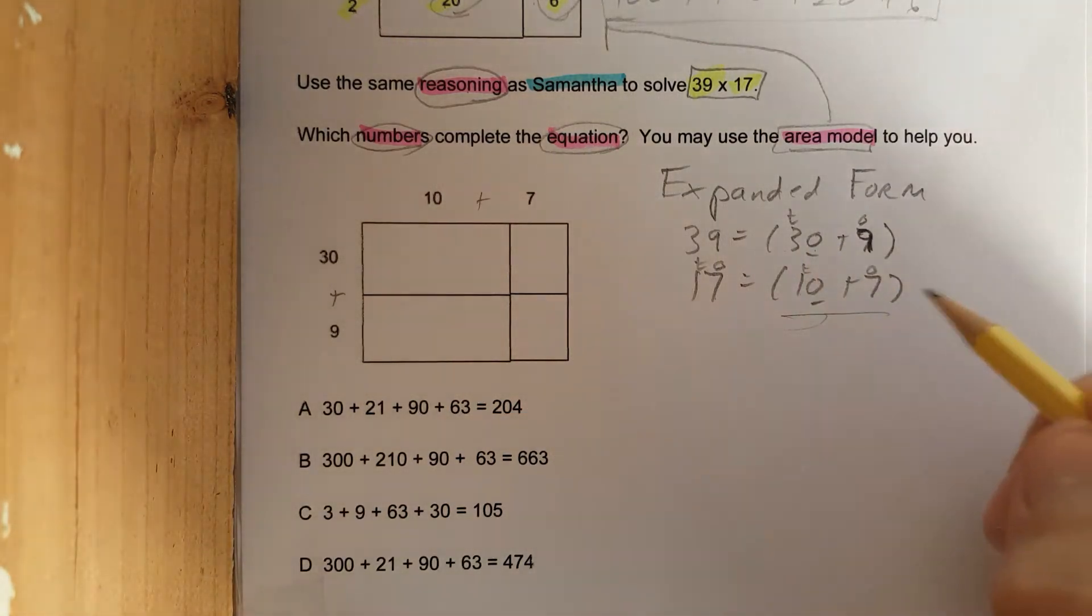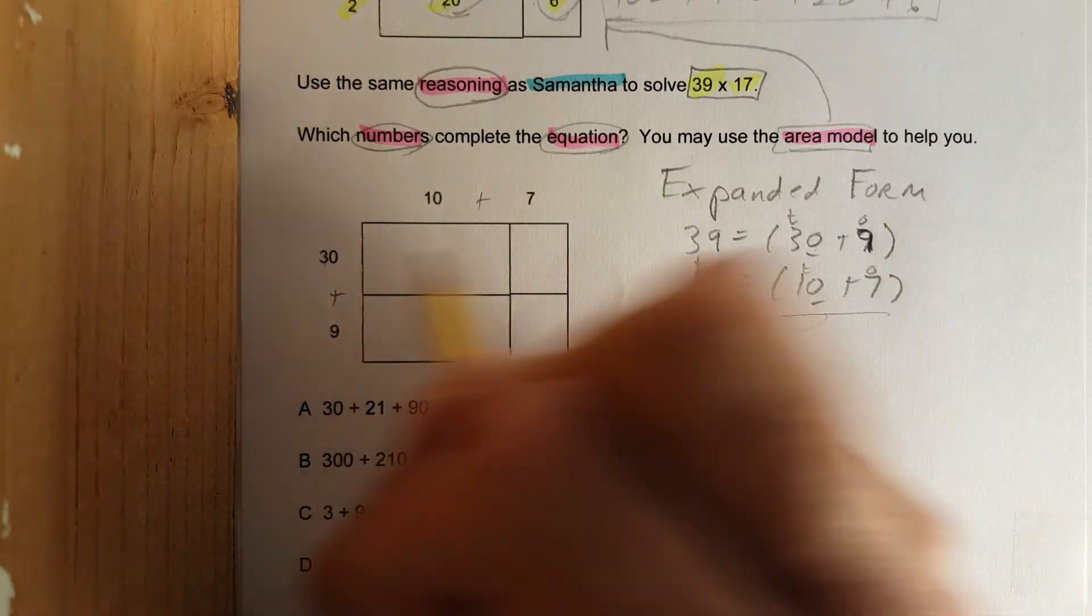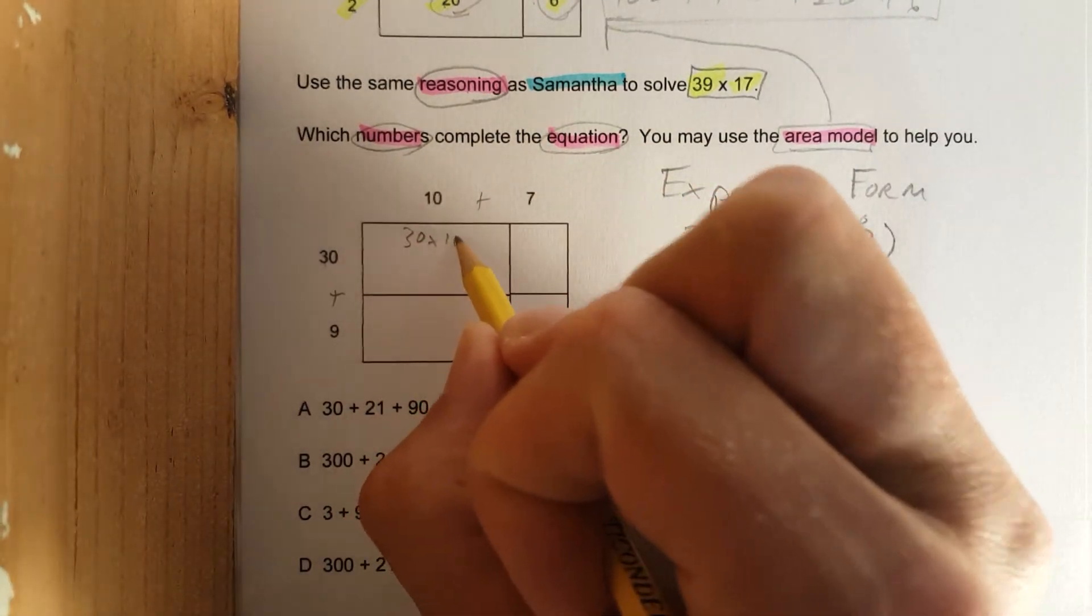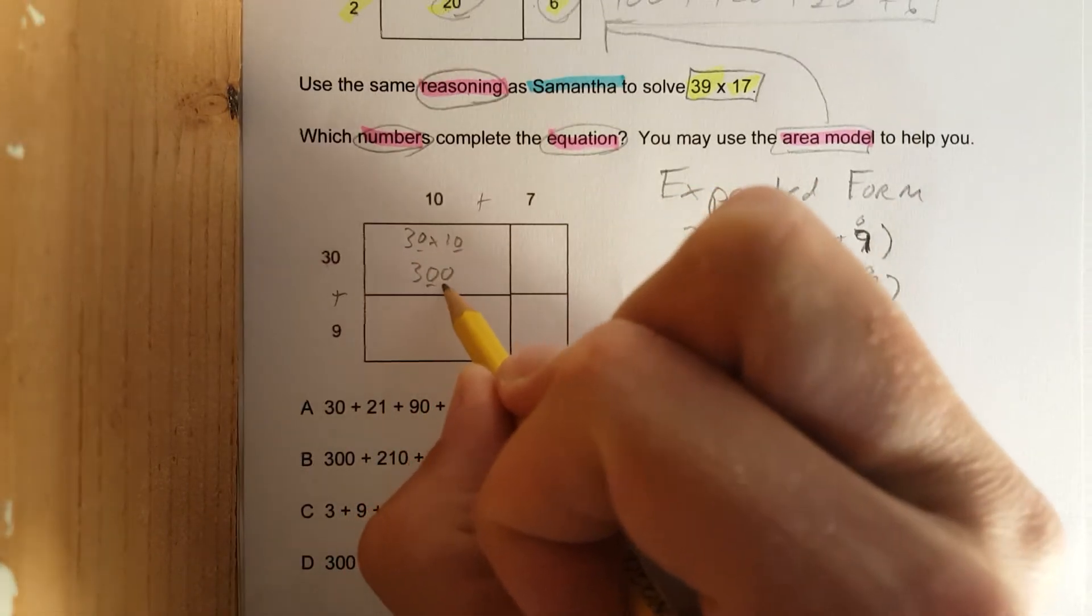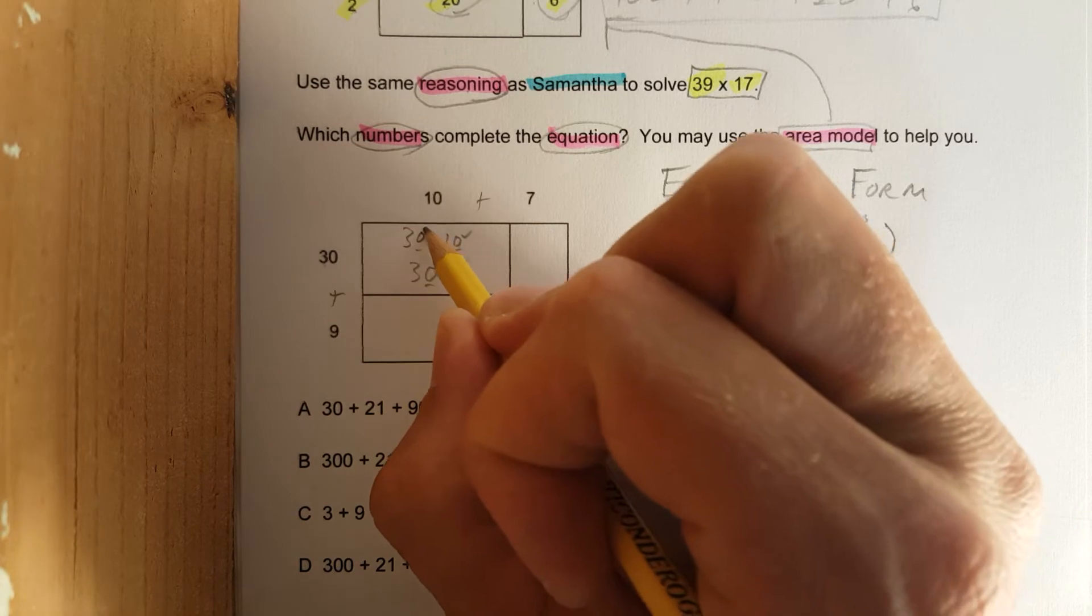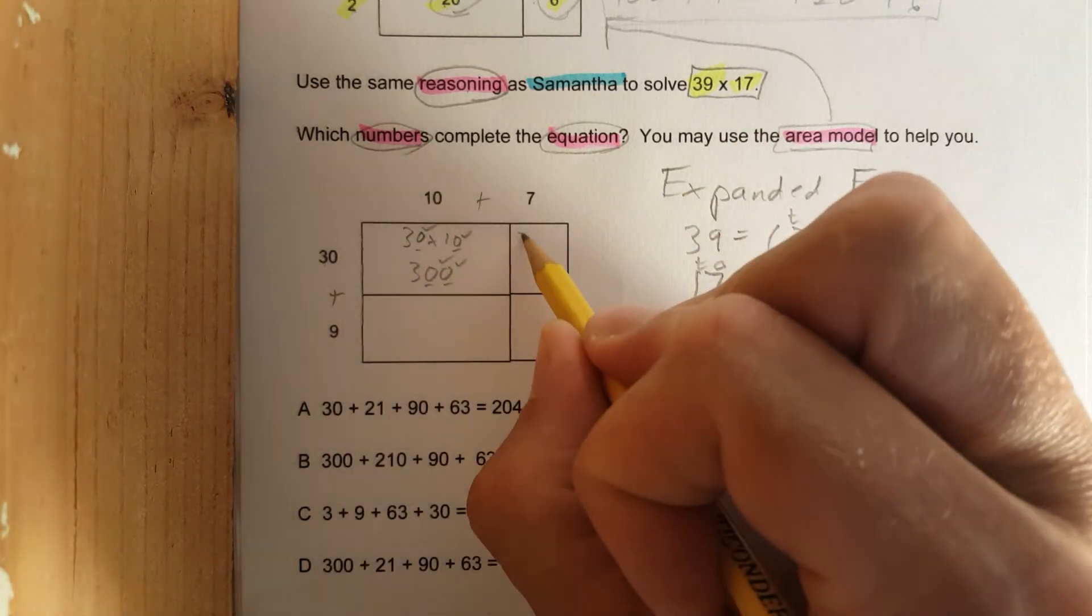Okay, so now let's solve it out. This is 30 times 10. 3 times 1 is 3, add two zeros: 1, 2, check check check. 30 times 7 is over here. 3 times 7 is 21, and one zero. Check check check, 300 and 210.